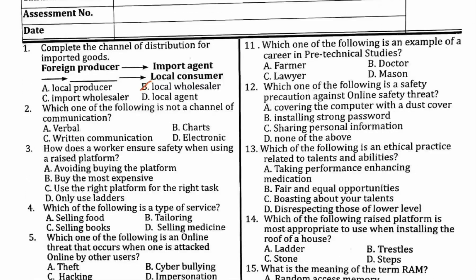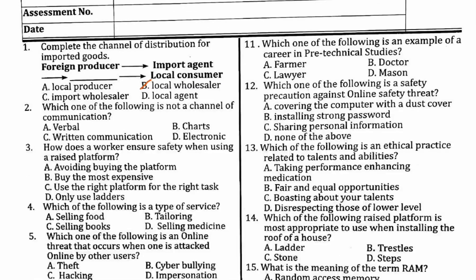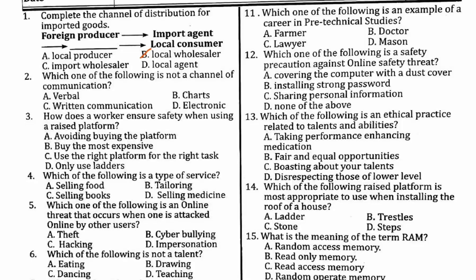Number two: each of the following is not a channel of communication. Ababo is a channel of communication. Chat is a channel of communication. Electronic is a channel of communication. But regional communication is not a channel of communication. Therefore, the correct answer for number two is C.